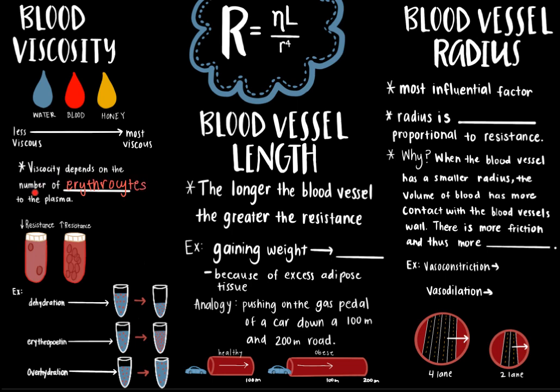Dehydration increases resistance because the volume of plasma decreases, resulting in a higher ratio of red blood cells to plasma. Another example is seen with athletes who have taken synthetic erythropoietin drugs to increase their red blood cell count, which increases oxygen-carrying capacity. Abuse of these drugs can cause so many red blood cells to be in the blood that it becomes too viscous to flow efficiently. If severe enough, blood flow will be greatly hindered, clots may form, and blood may not be able to make it back to the heart. On the other hand, overhydration will cause viscosity and resistance to decrease; if severe enough, blood flow will be too fast for proper exchange of nutrients and waste products in the capillaries.